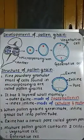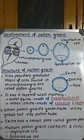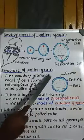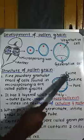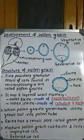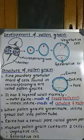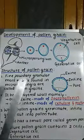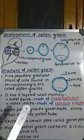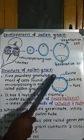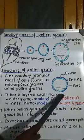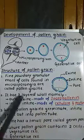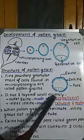Now let us study the structure of the matured pollen grain. This diagram represents the structure of a matured pollen grain. Pollen grains are usually spherical in shape, measuring about 20 to 25 micrometers in diameter. You are also observing a two-layered wall — one shown in blue color and one in green color.